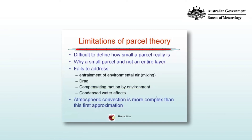There are some problems with parcel theory. It's difficult to know exactly how big a parcel really is. There's also the issue of why we lift or cause a parcel to descend rather than an entire layer of atmosphere. Parcel theory also fails to address entrainment of environmental air — that is, mixing between the parcel and the environment — as well as drag, compensating motion by the environment, and condensation water effects. So atmospheric convection, the result of buoyancy of parcels warmer or cooler than the environment, is more complex than this first approximation. But parcel theory does allow us to assess things like stability quite well.